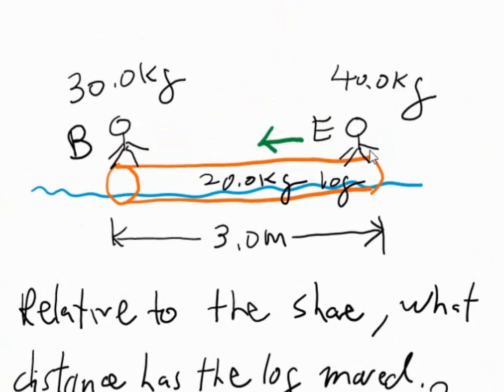So as the person Ernie from the right moving to the left toward Burr, Burr stays the same at the left end of the log. And we assume that the water resistance is negligible during the motion.